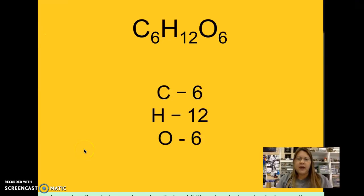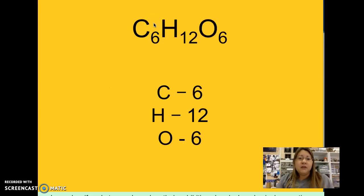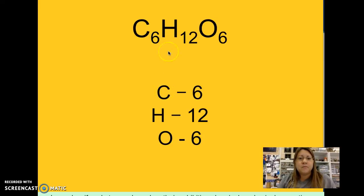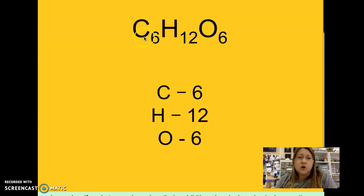Let's look at the examples in your notes. C6H12O6 is the chemical formula for one molecule of glucose. We're going to count the atoms so you can have a little practice. I like to write out the elements first — C for carbon, H for hydrogen, O for oxygen — and then determine the number of atoms for each. For this glucose example, we have 6 carbon, 12 hydrogen, and 6 oxygen.